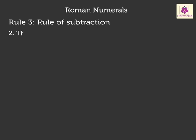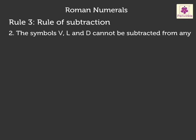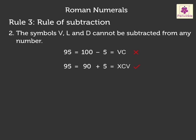The symbols V, L, and D cannot be subtracted from any number. For example, 95 cannot be written as VC (100 minus 5). Instead, 95 should be written as XCV, which is 90 plus 5.